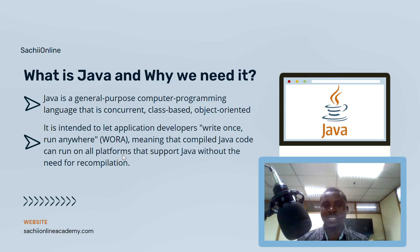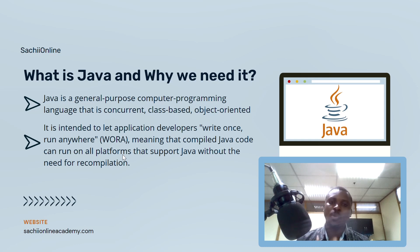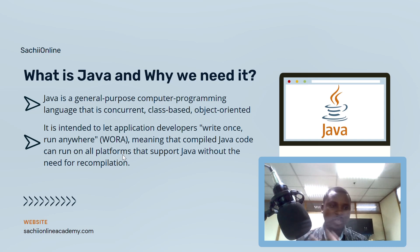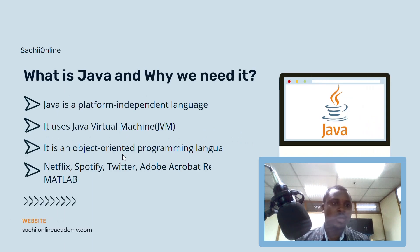Java uses the concept of objects — it is object-oriented, where everything is an object in the language. We'll discuss all those things later. Java is intended to let application developers write once, run anywhere, meaning that compiled Java code can run on all platforms that support Java without the need for recompilation. This is the top advantage of why we need Java — it supports write once, run anywhere.